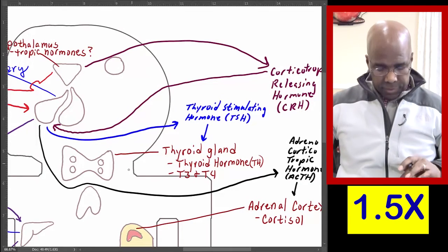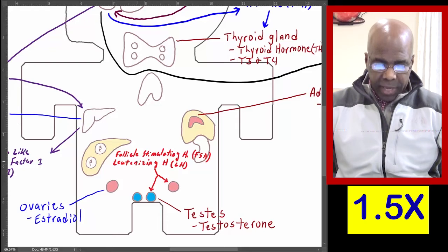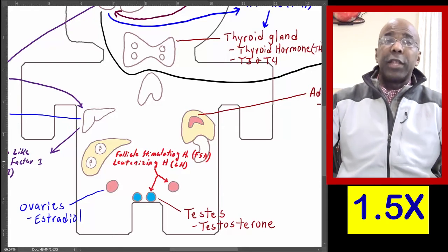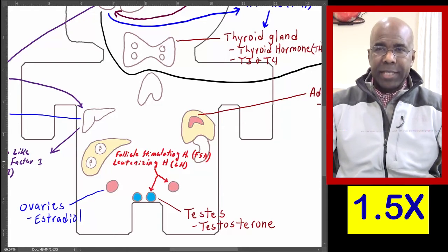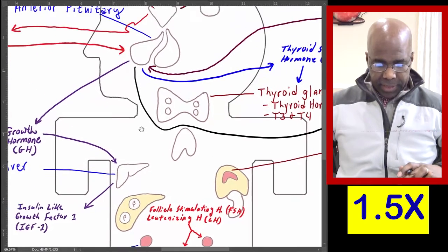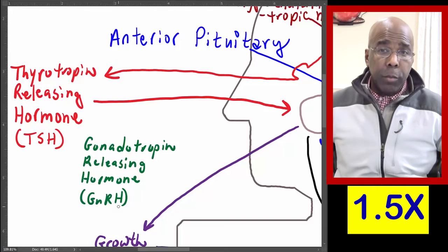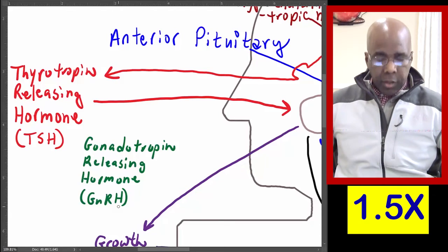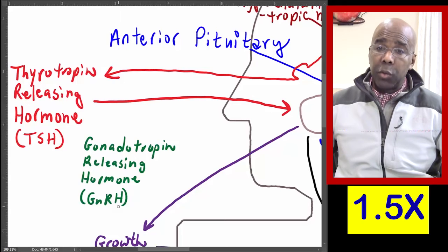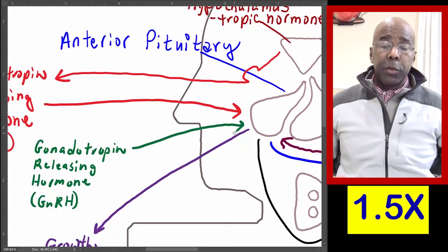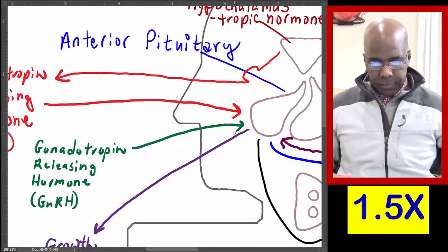Let's look next at our gonads. We have two hormones here: follicle-stimulating hormone and luteinizing hormone. These hormones are secreted by the anterior pituitary. However, there is another hormone that stimulates the anterior pituitary to release these hormones, and that hormone is gonadotropin-releasing hormone, abbreviated GnRH. GnRH stimulates the anterior pituitary to release luteinizing hormone and follicle-stimulating hormone. Gonadotropin-releasing hormone is secreted by the hypothalamus.